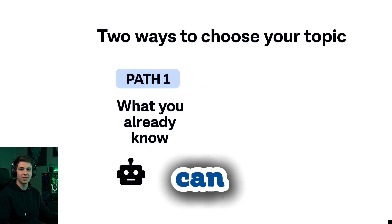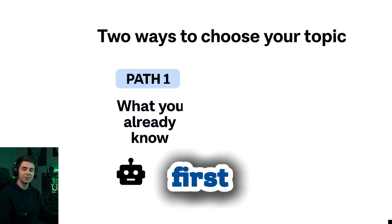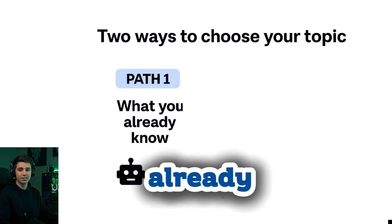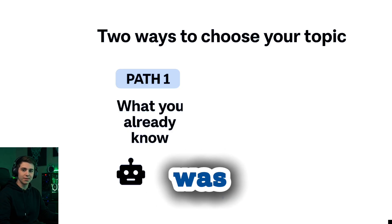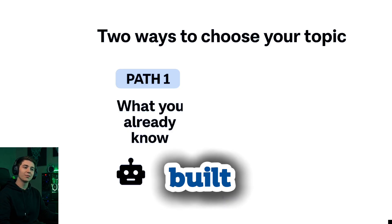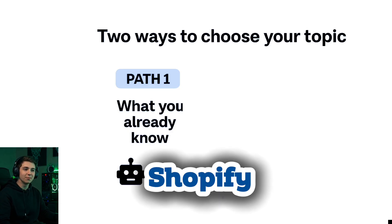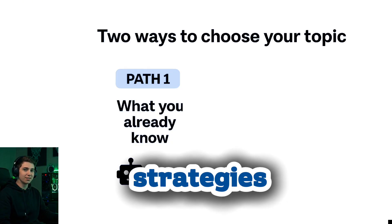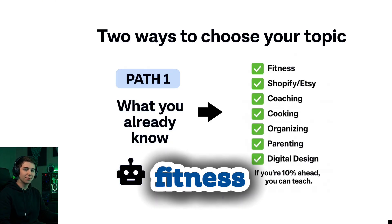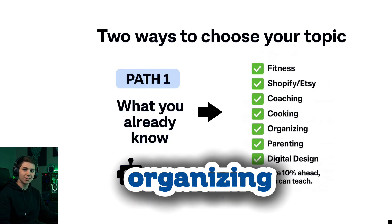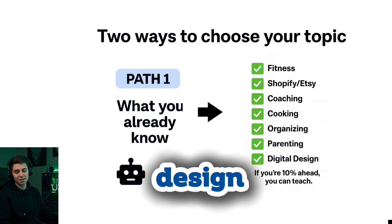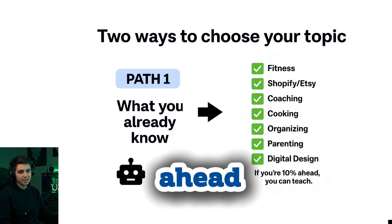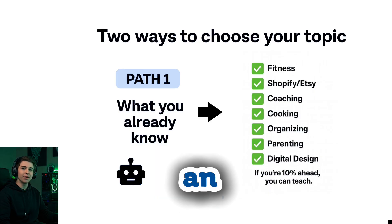There are two ways you can choose your topic. The first is the easy path: use what you already know. For me, this was simple — I've built multiple six-figure Etsy and Shopify stores and coached hundreds of people on the same strategies. But maybe you're into fitness, mindset, organizing, parenting, design, or anything other people struggle with. Any skill you're even slightly ahead in can become an ebook.